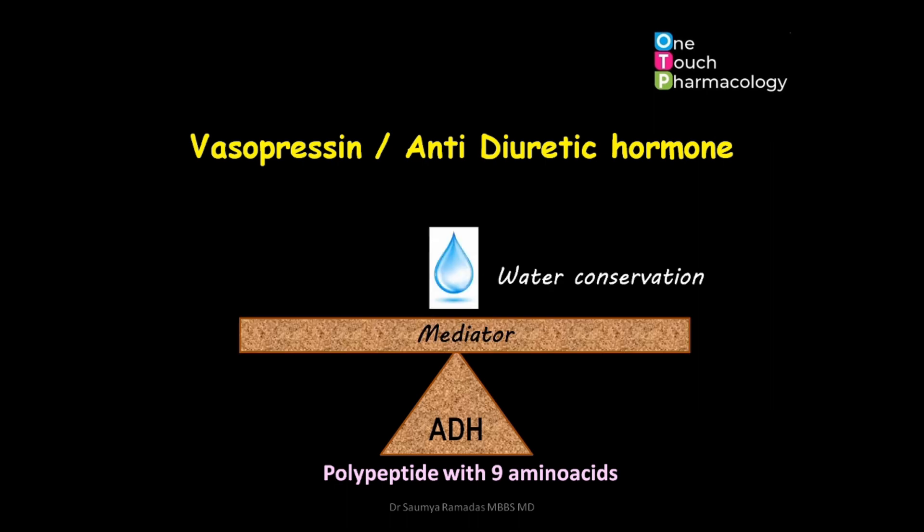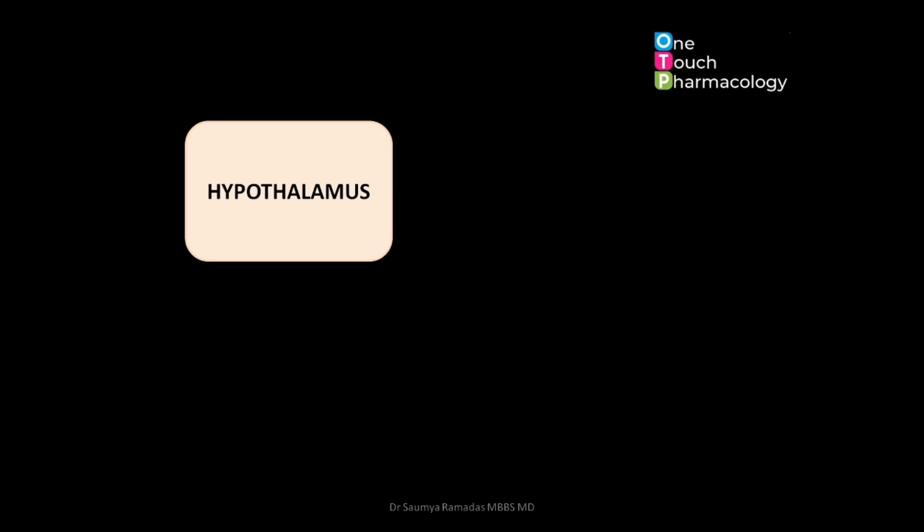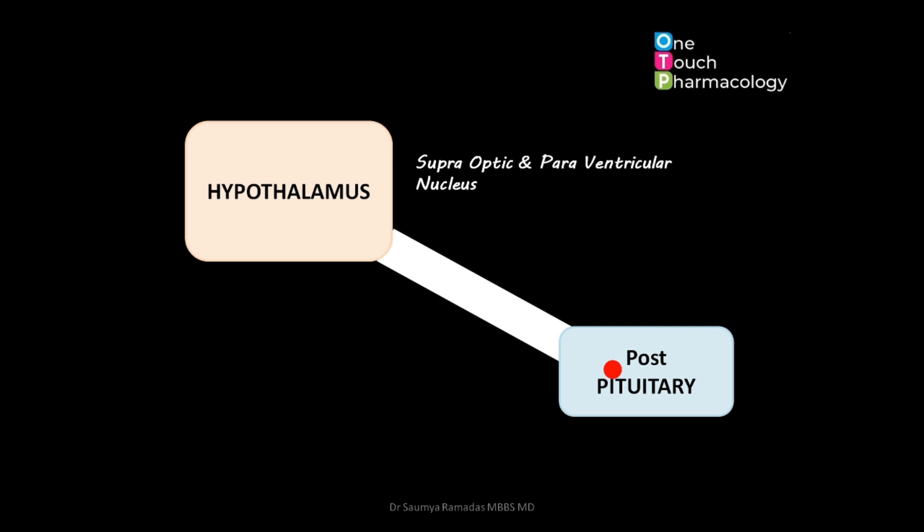Vasopressin, or the antidiuretic hormone, is the mediator for regulation of water conservation in the body. The antidiuretic hormone is synthesized in the magnocellular neurons in the supraoptic and paraventricular nucleus of the hypothalamus. It is secreted from the hypothalamus into the posterior pituitary, and the posterior pituitary secretes the hormone when there is an adequate stimulus.